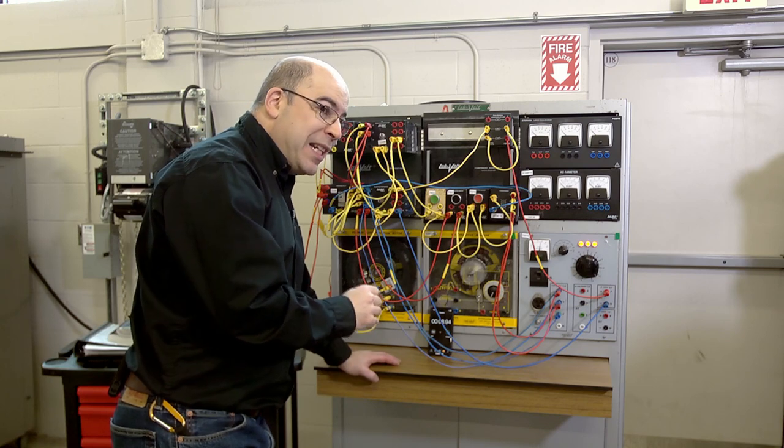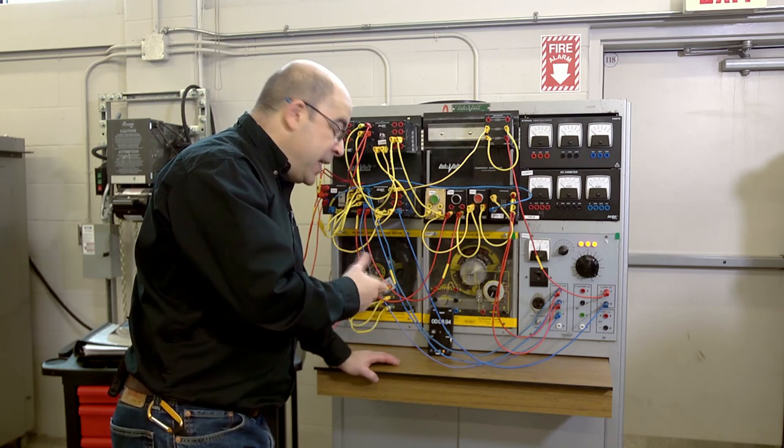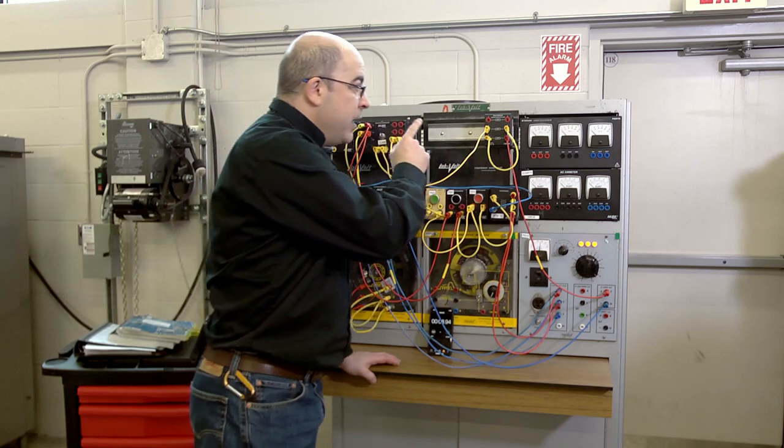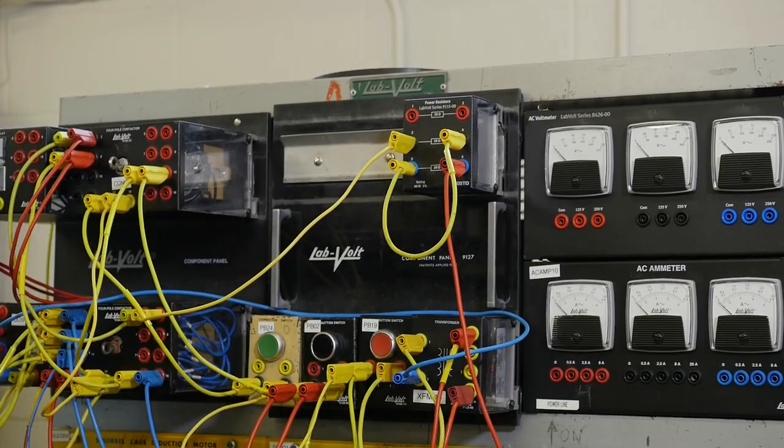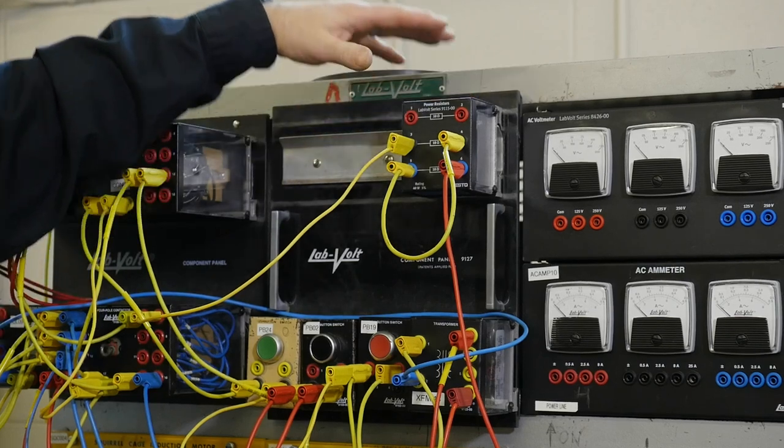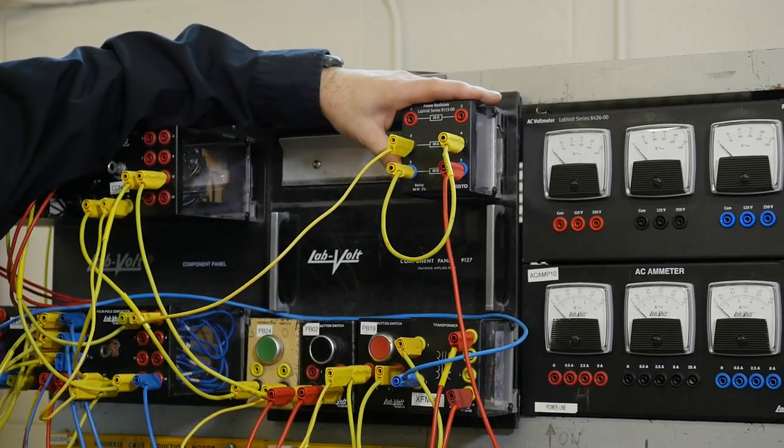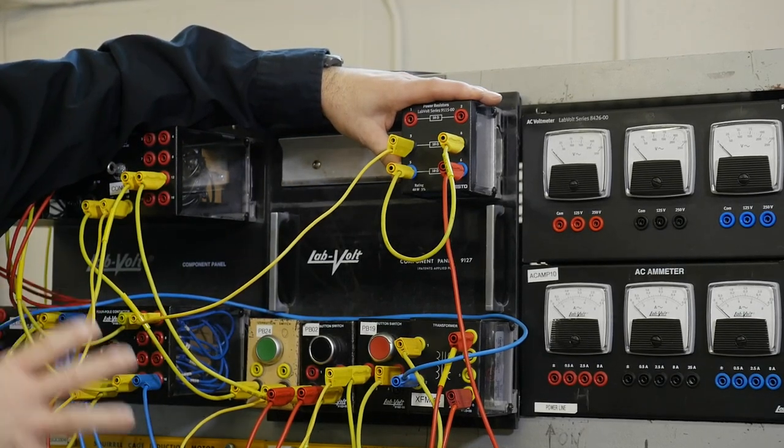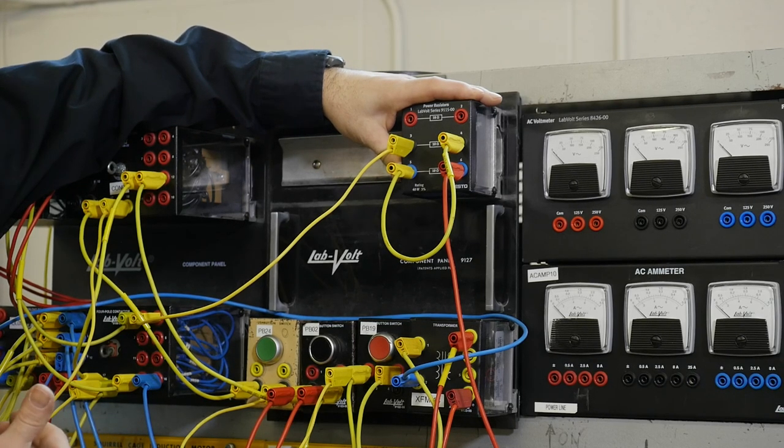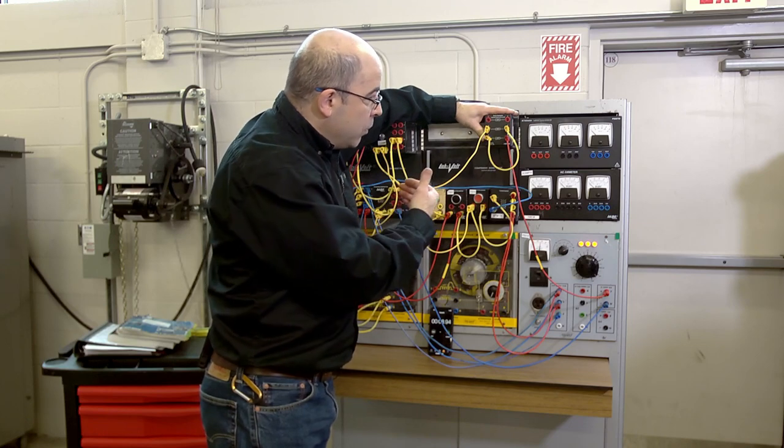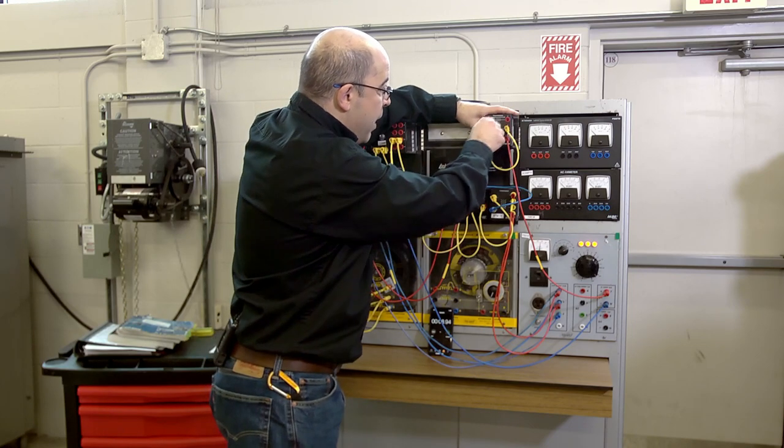Now I could probably increase or decrease the amount of time by decreasing the amount of resistance. Currently we have 20 ohms in the circuit. If I was to take some of that resistance down, I'd have a stronger magnetic field internally, and I could decrease the amount of time it would take for it to come to a full stop. And we're going to proceed and do that right now.